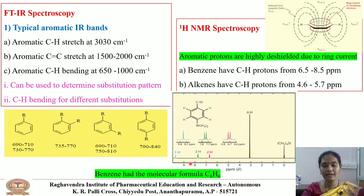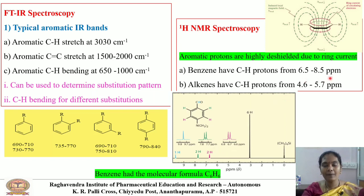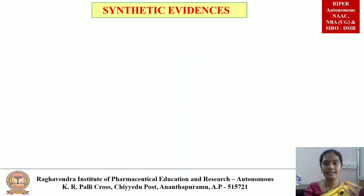In the NMR spectra, we can see the scale from 0 to 10. In the structure shown, we can find the aromatic protons — one proton in sky blue color, one proton, and four aromatic protons in pink color. The aromatic protons are present at 6.5 to 8.5 ppm. So with these analytical evidences, we can confirm that benzene has the molecular formula C6H6.